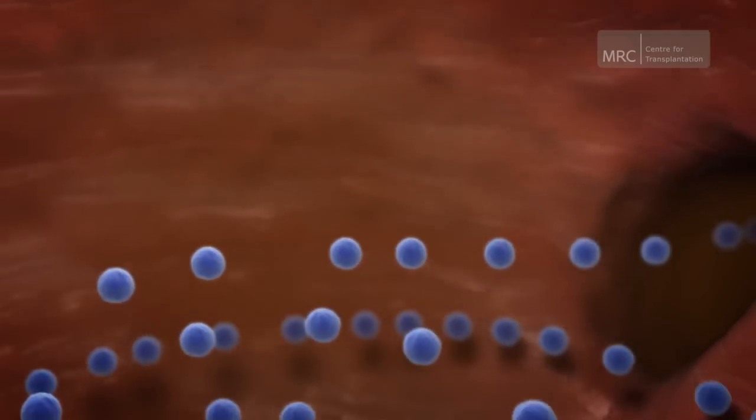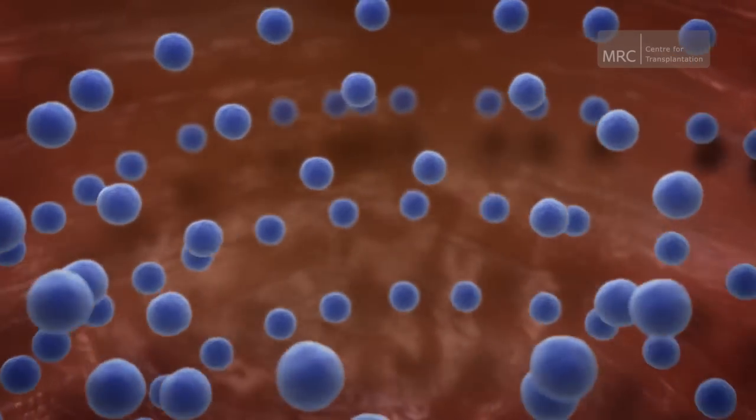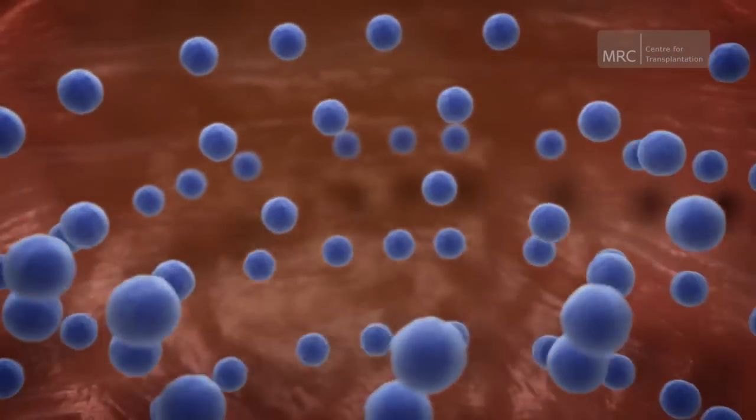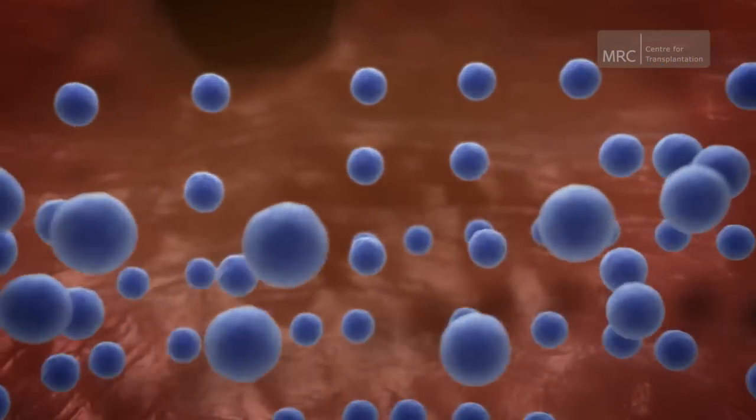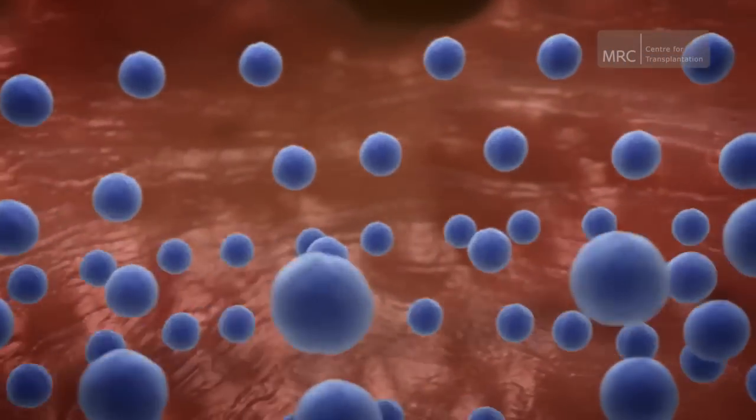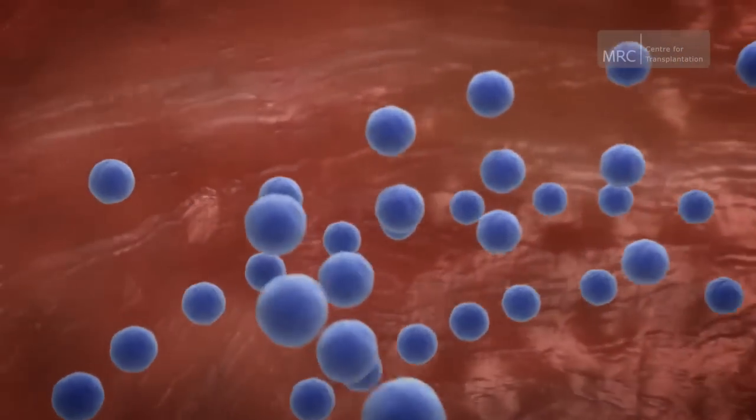The adaptive immune system called T cells continually circulate between the blood and lymph nodes and are on constant alert for any sign that the body is under attack. Within the T cells, a small subpopulation called regulatory T cells...